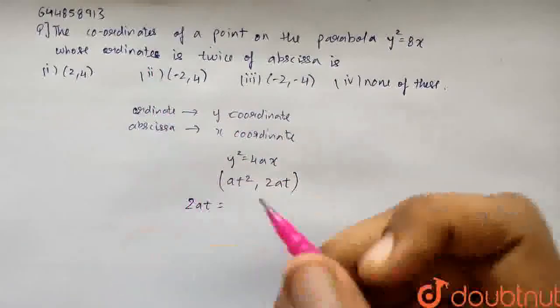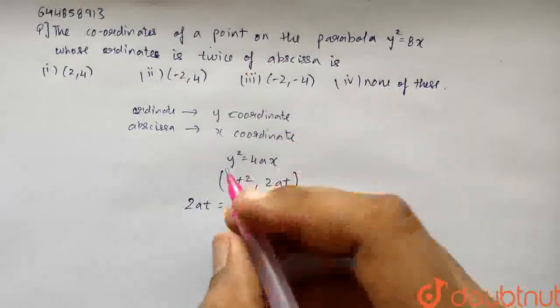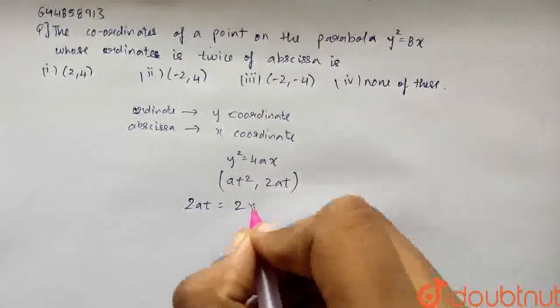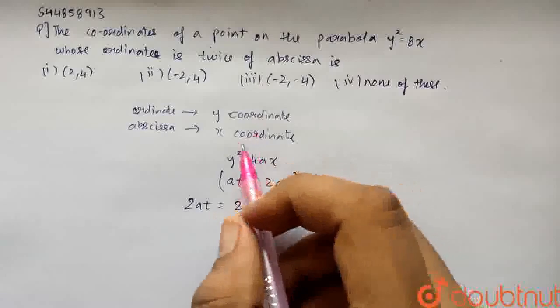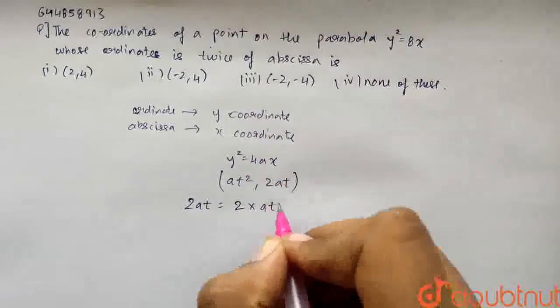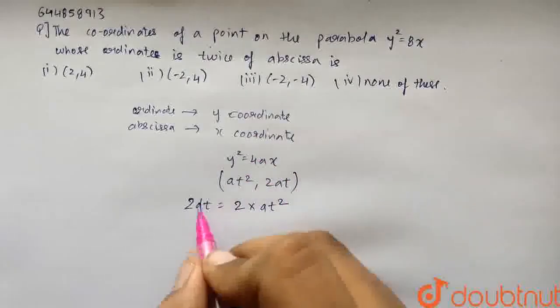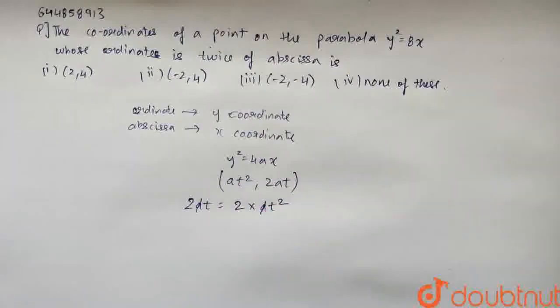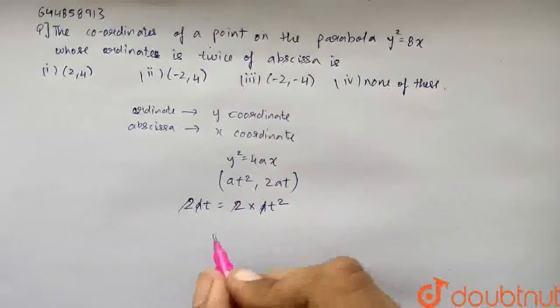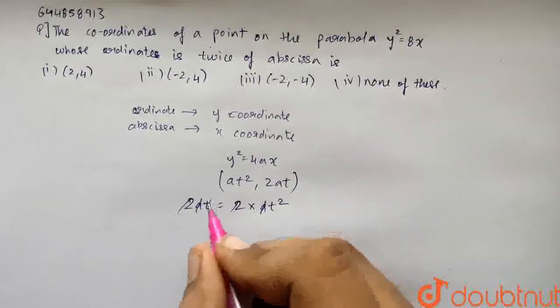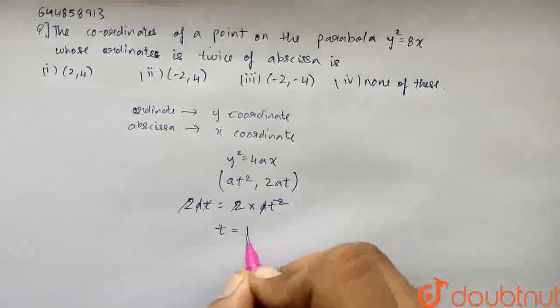That is 2 times the x coordinate, that is abscissa, which is at². a will get cancelled, 2 will also get cancelled, and 1t will also get cancelled, and we will get t equals 1.